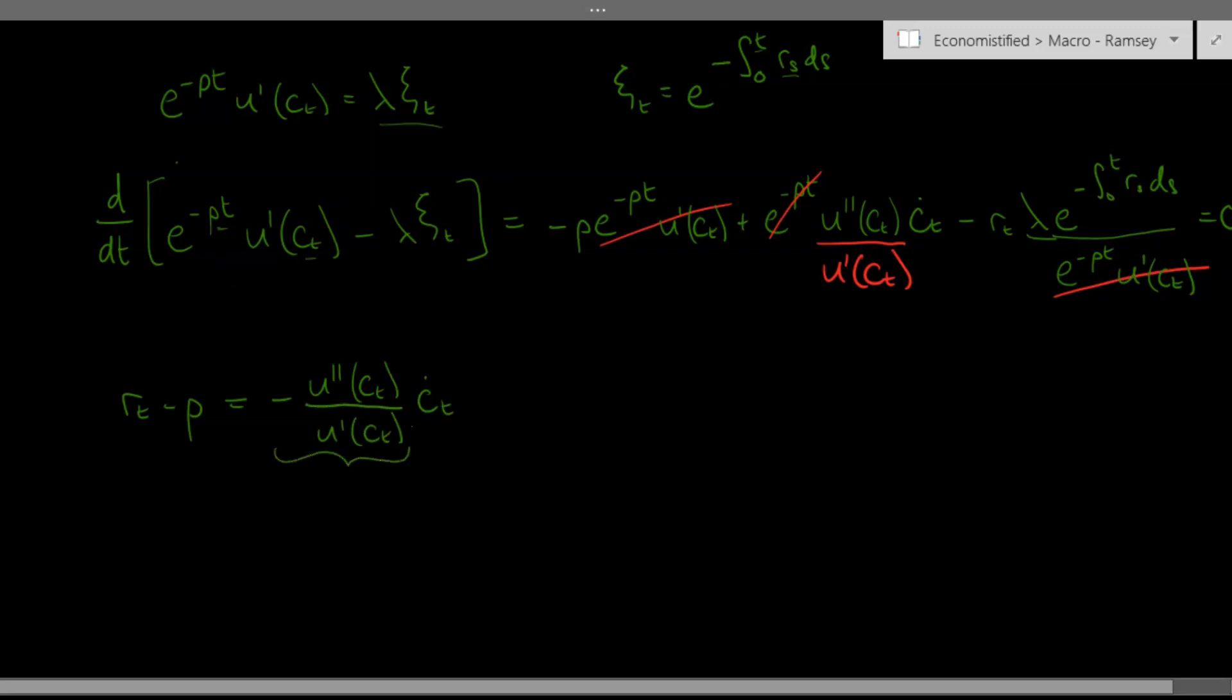Now this term here is the absolute risk aversion, and when we have CRRA utility, constant relative risk aversion,